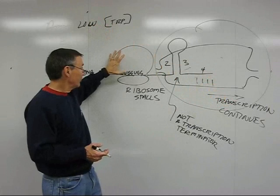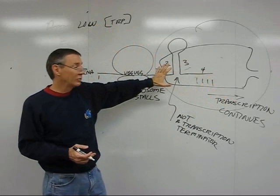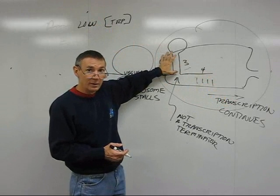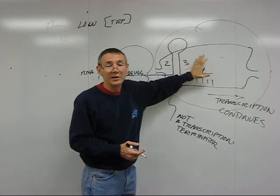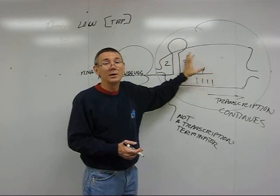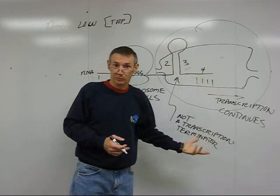If there's a lot of tryptophan, the ribosome goes right on through region 1, gets into region 2. Because the ribosome's in the way, 2 and 3 can't pair, which means 3 is still available when 4 is transcribed. 3 and 4 will pair and form a transcription terminator.